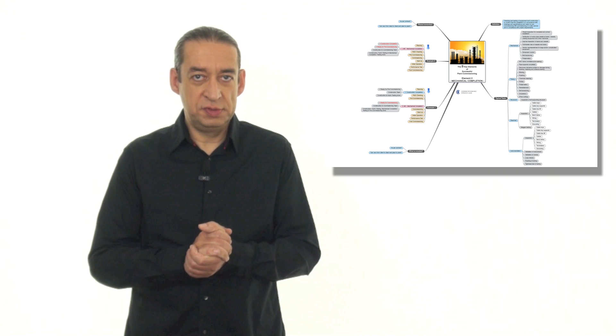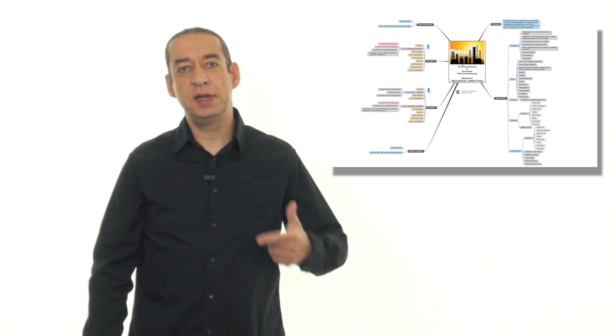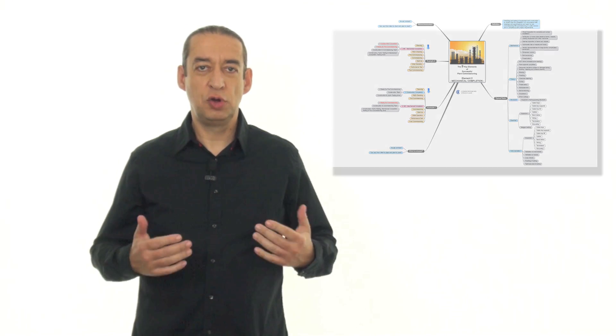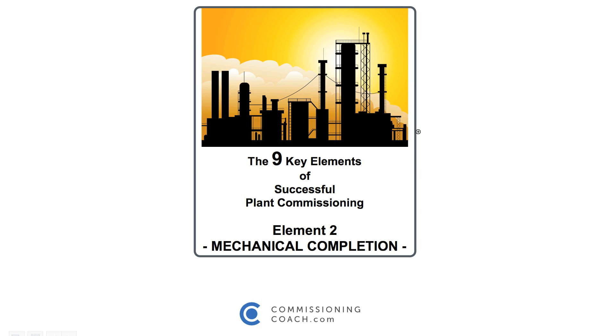So let's start with a detailed explanation of key element number 2, mechanical completion. The 9 key elements of successful plant commissioning. Element 2, mechanical completion.